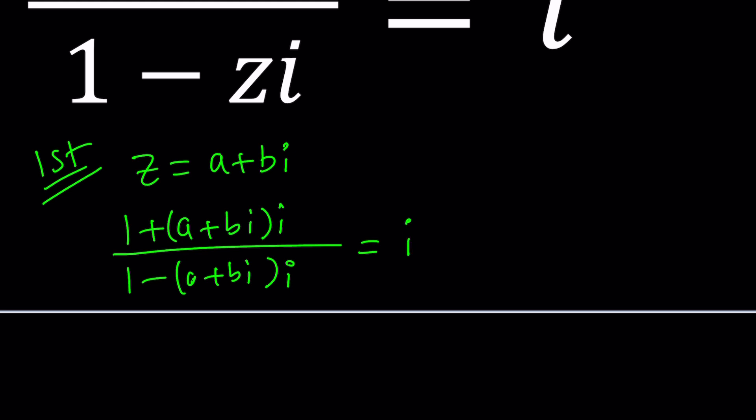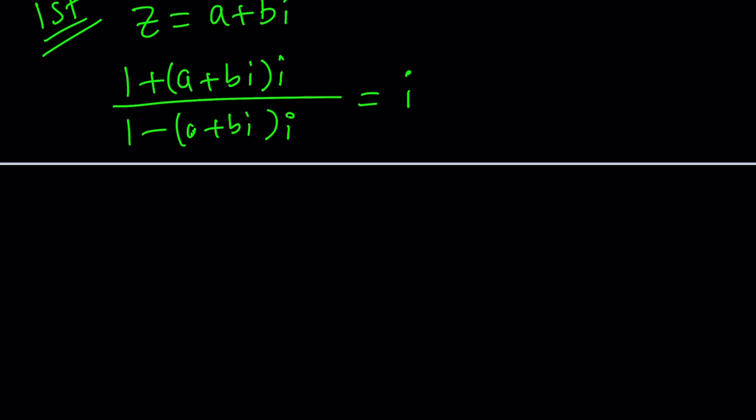Now let's distribute. It's going to be 1 plus ai and one thing that you should never forget: i squared equals negative 1. Anytime you multiply i by i you get i squared. I would highly recommend that you just replace it with negative 1 and do it mentally so you can save some time. This gives us ai plus bi squared which is minus b. At the bottom we have 1 minus ai and then minus bi squared which is plus b. And this equals i.